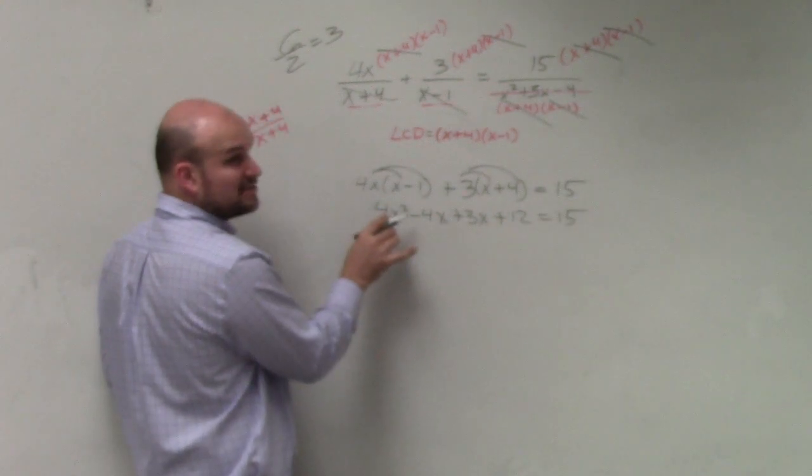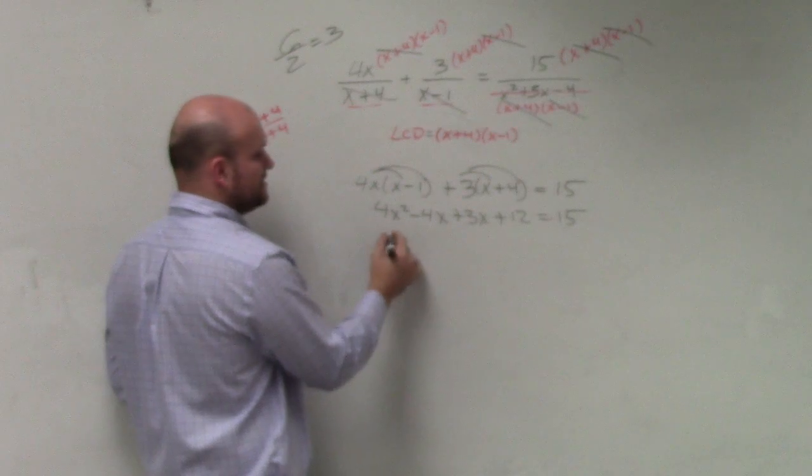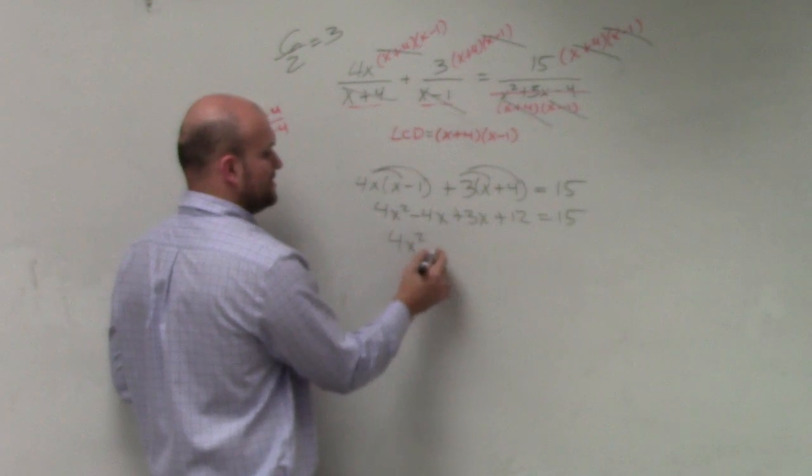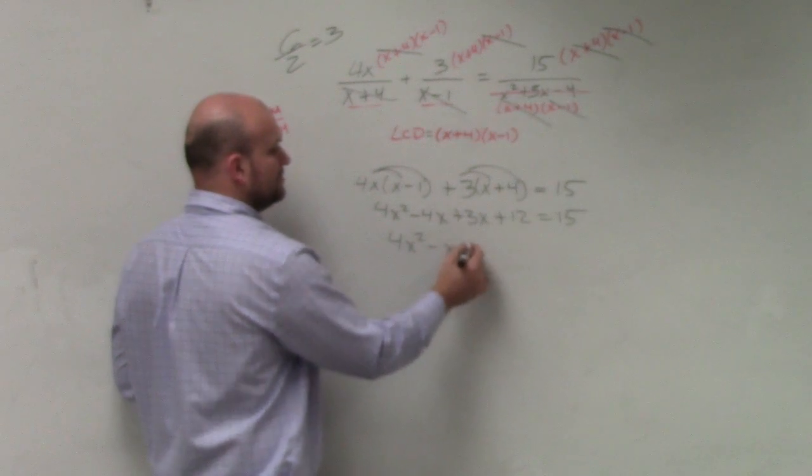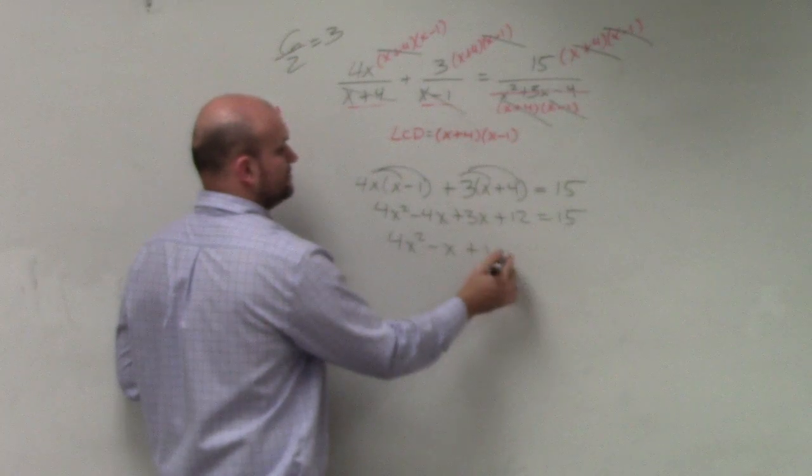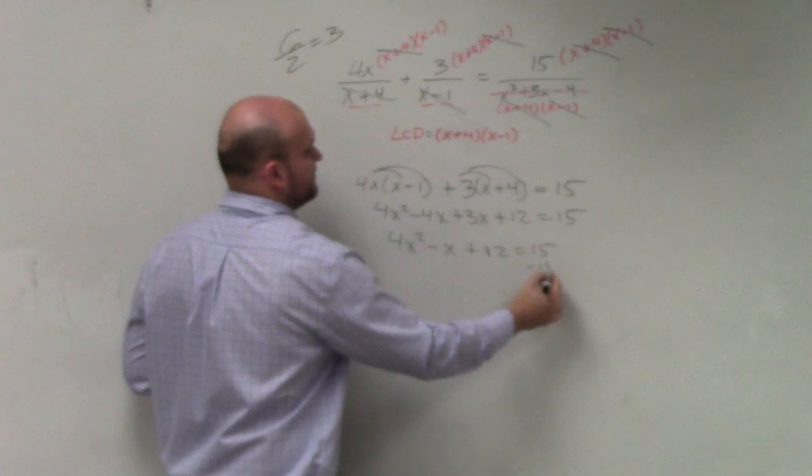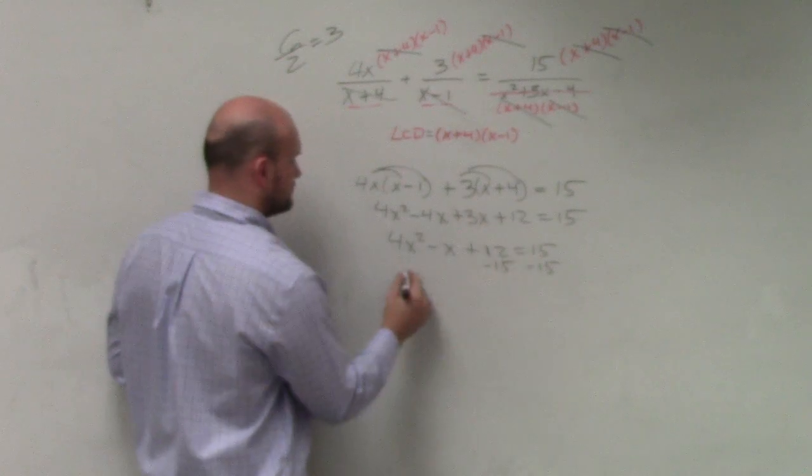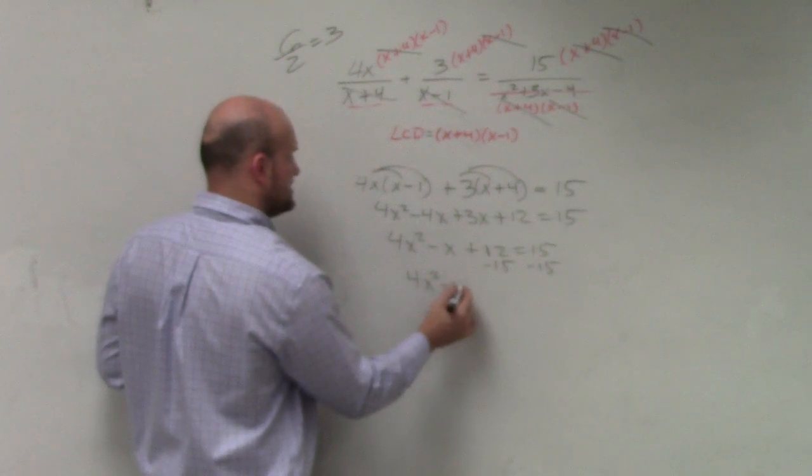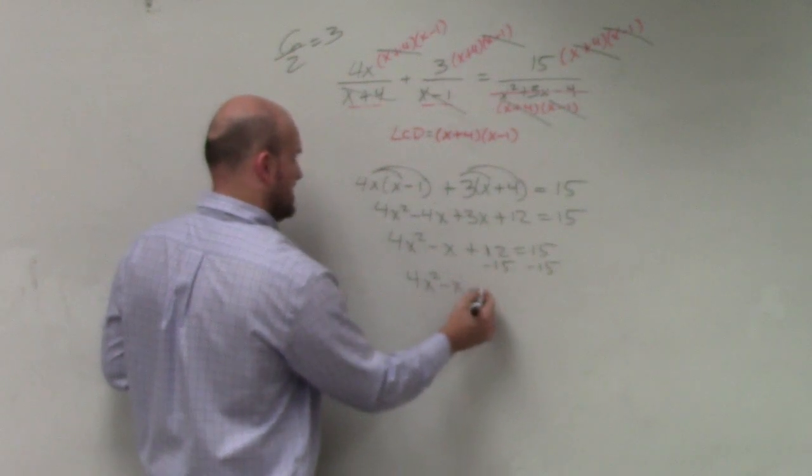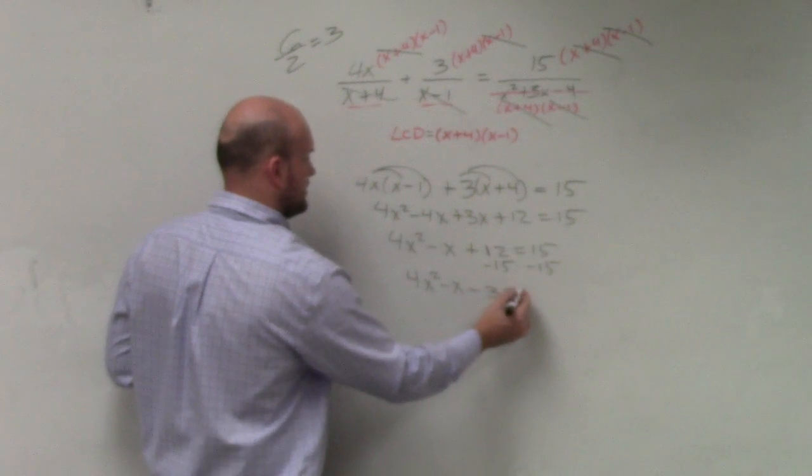4x squared minus 4x plus 3x plus 12 equals 15. I do know this is a quadratic though. In all quadratics, we can't isolate the x. We need to set them equal to 0. So therefore, I need to get the 15 to this side.